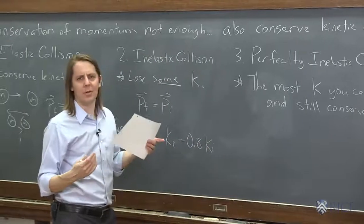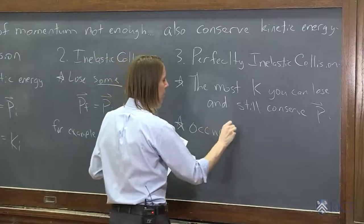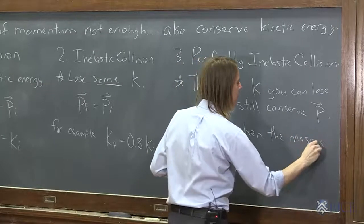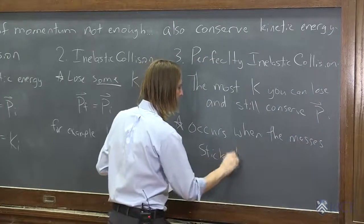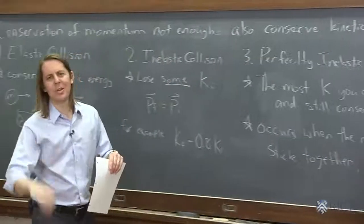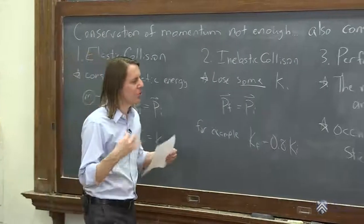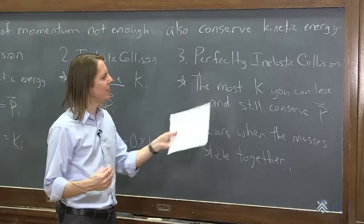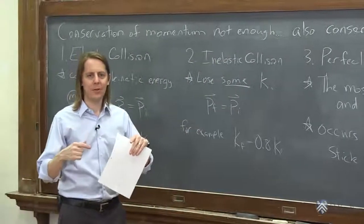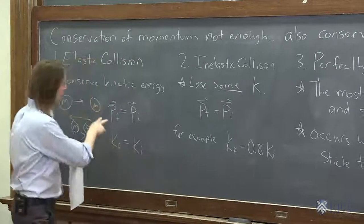So you'd think, wow, that must be hard to calculate. Here's the lucky thing. The lucky thing is it occurs when the masses stick together. Why? It's complicated. Let's not worry about why. You can actually go through the numbers and convince yourself why. But for now, I just want you to know that this is the case. Perfectly inelastic. It's the most K you can lose. And it occurs when the masses stick together. Which really just means the masses have the same final velocity. It's another way of saying the two final velocities are equal.